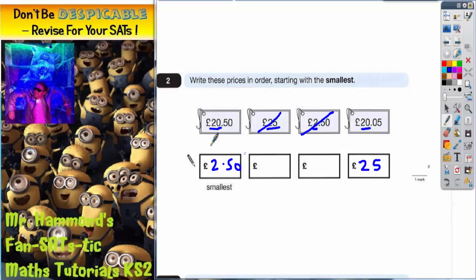Now the number of pounds matches, they both start with £20, so I've now got to look at the number of pence. This one has got 5 pence and this one's 50 pence. Obviously 5 pence is smaller than 50 pence.